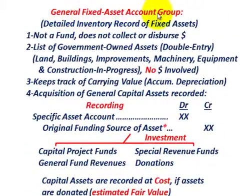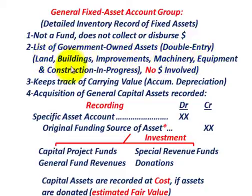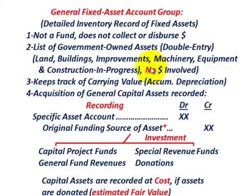The general fixed asset account group is a detailed inventory record of fixed assets. It's not a fund — it does not collect or disperse money. It is a list of government-owned assets in double-entry form, covering land, buildings, improvements, machinery, equipment, and construction in progress. It keeps track of the carrying value and the accumulated depreciation on those fixed assets.